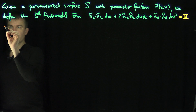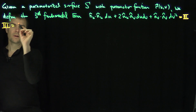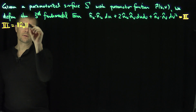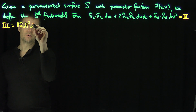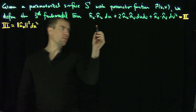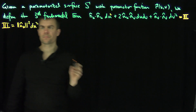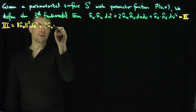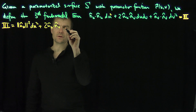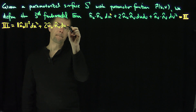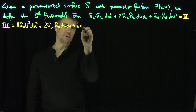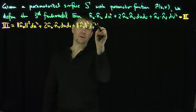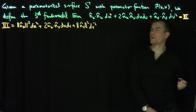III can also be written as the length of N_U hat squared dU squared, plus two N_U hat dot N_V hat dU dV, plus the length of N_V hat squared dV squared. That's our third fundamental form.